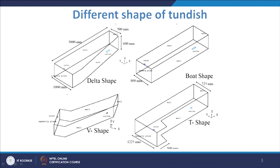We acknowledge the support from DST. The study was carried out on these four different kinds of tundishes. Normally we deal with two kinds of tundish: delta shape and board shape. Board shape has a normal rectangular cross-section that is extended. In the delta shape, you have a larger cross-section on the symmetry line and it becomes smaller towards both sides.